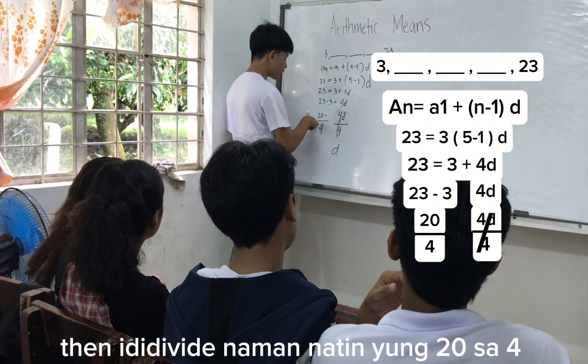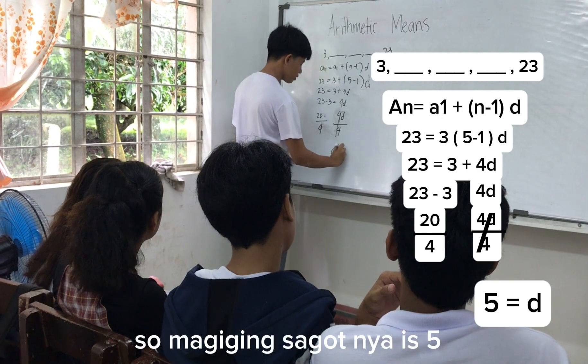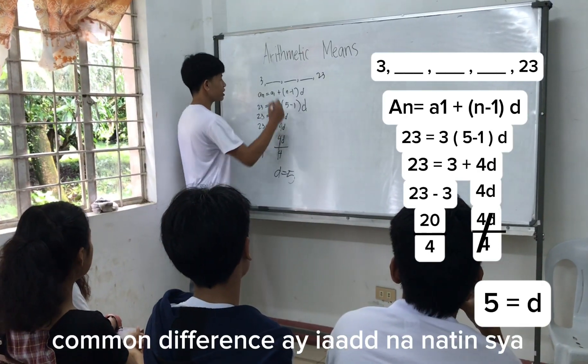Then, didibide naman natin yung 20, divide 4. So, makikiging sabi niya yung 5. Kung di-difeng, di-ad na natin sya.